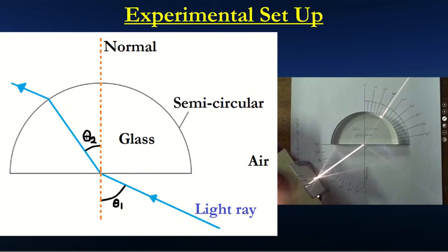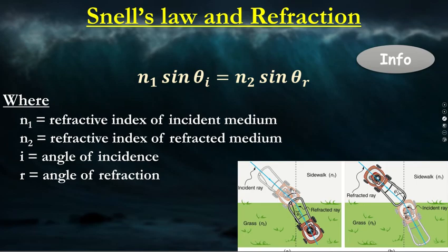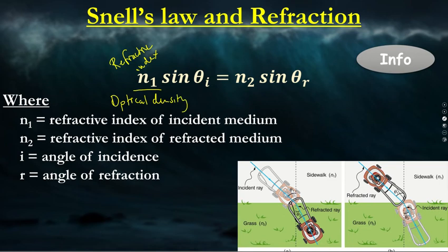One of the experiments we'll talk about uses perspex glass and light to refract it. The scientific model we're going to use is called Snell's Law. We have N1, which is the refractive index — think of it as optical density, meaning how closely packed are the components. Theta_i is the incident ray going in, and theta_r is the refracted ray that's getting bent.